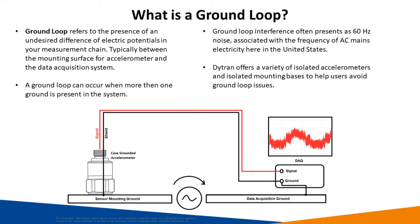Ground loops are caused by undesired differences of electric potentials in your measurement chain. Typically, this difference is between the ground of your accelerometer and the ground of your data acquisition system, oscilloscope, or data logger. This can be caused by several factors, including long distance between accelerometers and the data acquisition system, or when mounting sensors to electrically charged test articles, such as an electric motor or generator.